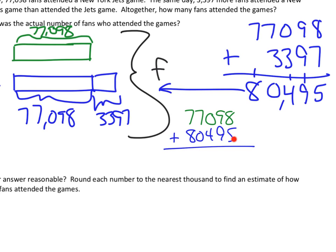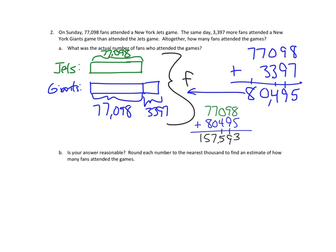Again, we're going to start with our smallest unit. So 8 plus 5 is 13. 3, record the 1 on the line. 9 plus 9 plus 1 is 19. Record the 1 on the line. 0 plus 4 plus 1 is 5. 7 plus 0 is 7. 7 plus 8 is 15. We've got our comma here. So I think our answer is... I think our answer is that 157,593 fans attended the games.